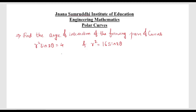Hello all. In this video we'll learn to solve problems on polar curves. Find the angle of intersection of the following pairs of curves: R² sin2θ = 4 and R² = 16 sin2θ.